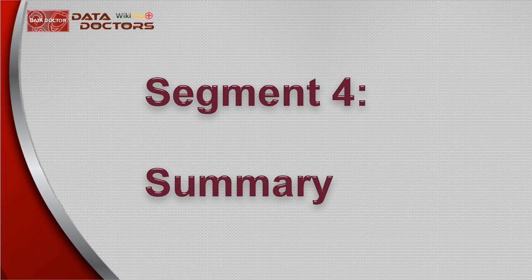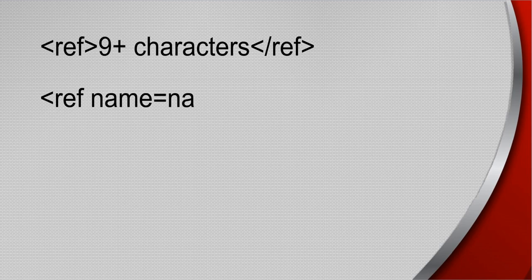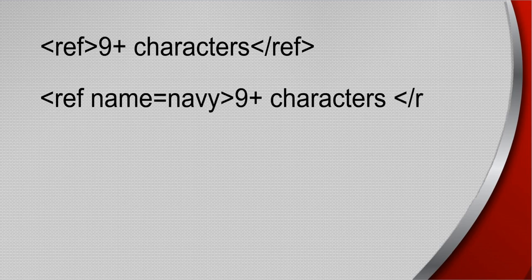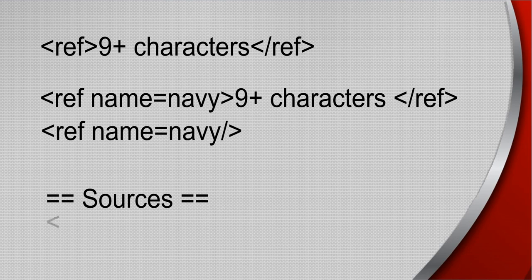The concept is simple. Inline citations come in pairs — open and closed tags. They can be used for multiple source citations by naming them. Any further times the source is cited, copy the named tag and close it with a forward slash. The references tag is only used once and always goes just below the sources heading.